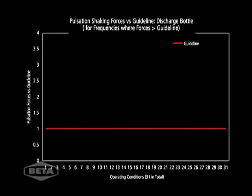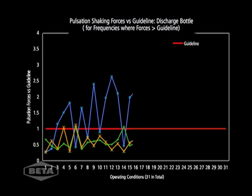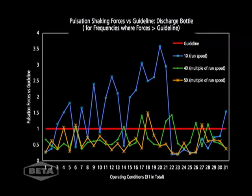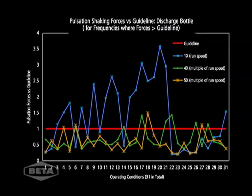Pulsation forces will be different at each condition. This chart illustrates the importance of analyzing all operating conditions. This compressor has 31 different conditions. At one times run speed, there are many conditions where the forces exceed guideline. We also have to catch problems at higher frequencies. In this case, we see some conditions where forces exceed guideline at 4x and 5x run speed.